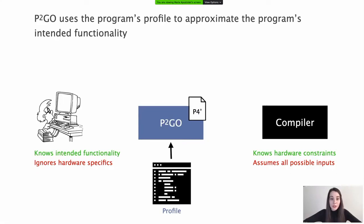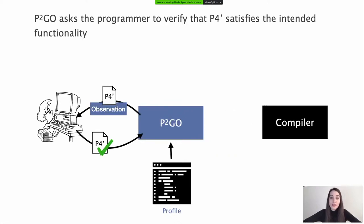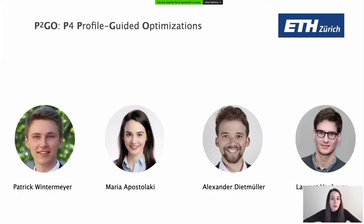Once P2Go generates a new program, say P4 Prime, it probes the compiler to verify that it uses less resources, ensuring the modifications made to the initial program are useful. Once the gain is guaranteed, P2Go asks the programmer to verify that P4 Prime also satisfies the initial functionality. P2Go is a system for P4 profile-guided optimizations which we designed and built together with Patrick, Alex, and Laurent at ETH Zurich.